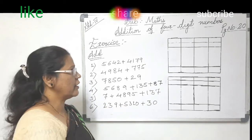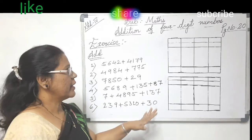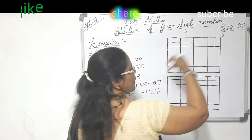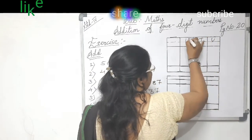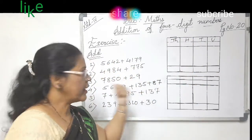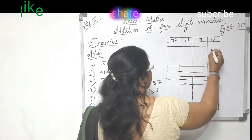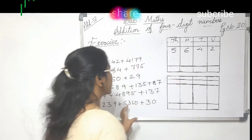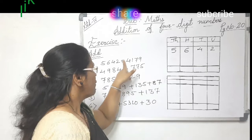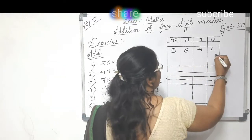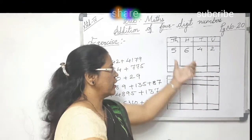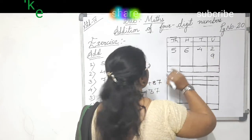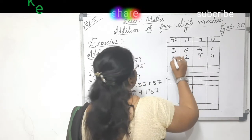The second rule is that you have to write down the place values. Since it is a 4-digit number, the places are units, tens, hundreds, and thousands. We will start from our right-hand side. So write the first number from the right: units place is 2, tens place is 4, hundreds place is 6, and thousands place is 5. The second number is also a 4-digit number, 4,179. Write it below: units place is 9, tens place is 7, hundreds place is 1, and thousands place is 4.